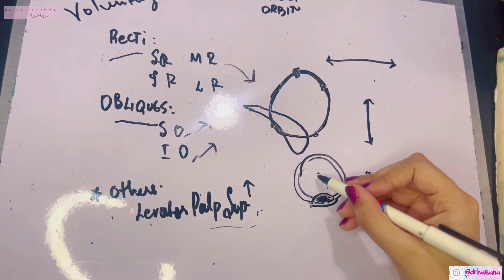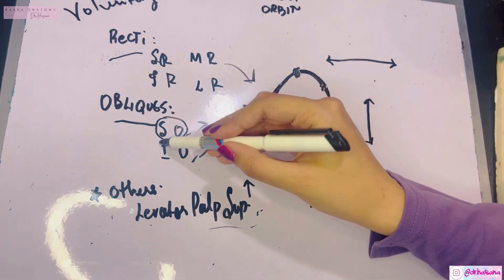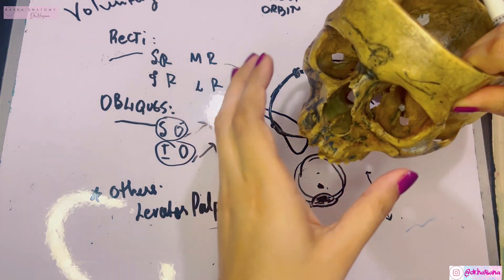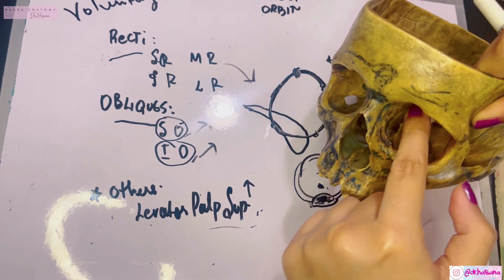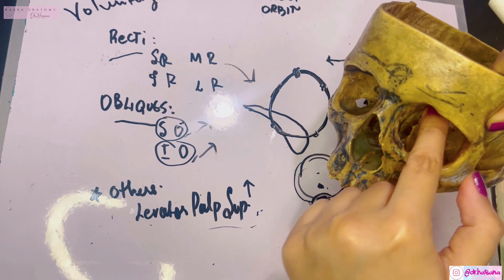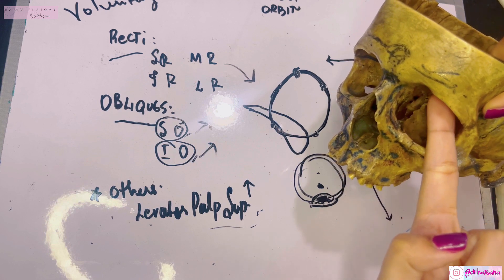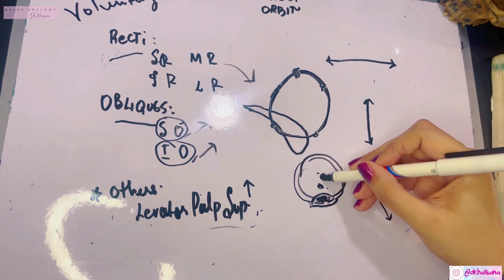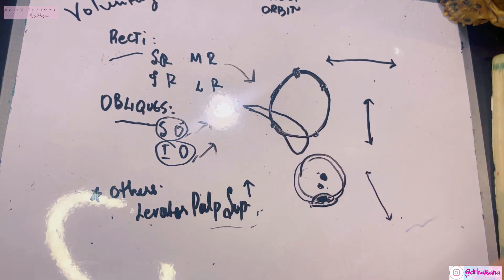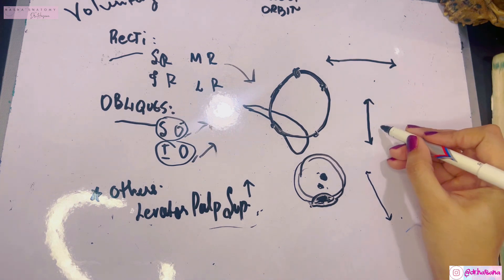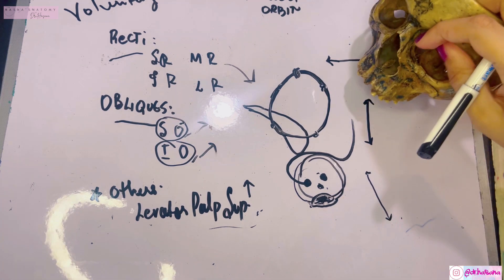Superior rectus inserts into the superior sclera, inferior rectus into the inferior part, medial rectus into the medial part, and lateral rectus into the lateral part. The superior oblique comes forward to the trochlear fossa, located in the anteromedial part of the orbital roof. This area forms a pulley for the superior oblique tendon, which then runs laterally and backwards to insert into the sclera just behind the superior rectus.